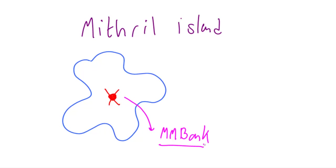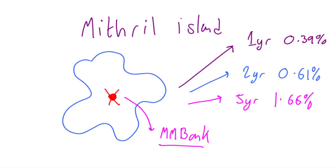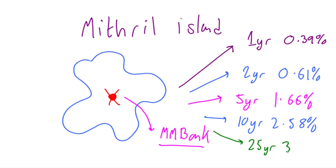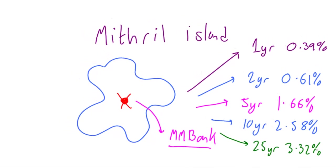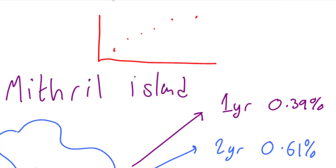They are the bank with the lowest amount of risk in the country. They only have a certain number of bonds outstanding: a one-year bond at 0.39%, a two-year bond at 0.61%, a five-year bond at 1.66%, a ten-year bond at 2.58%, and a 25-year bond trading at 3.32%. The problem is that if we build a yield curve from those figures, we don't have any figures in between.